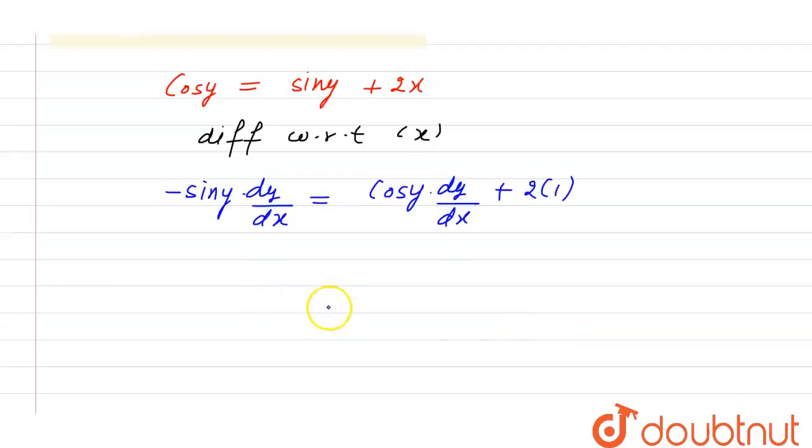We can collect dy divided by dx on the right-hand side. So minus of 2 is equal to cos of y into dy divided by dx plus sine of y into dy divided by dx.